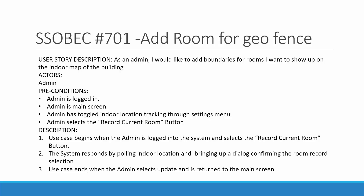To add a room to the SQL database, you must be an admin or facility manager, be logged in, be on the main screen, and have already toggled the indoor localization tracking in the settings menu. To prompt the dialog, all you have to do is press or select the record current room button.